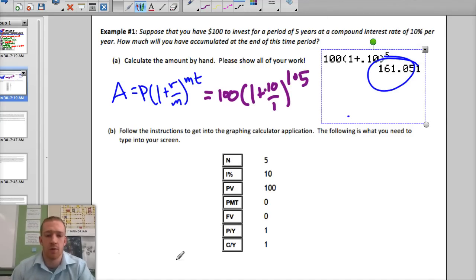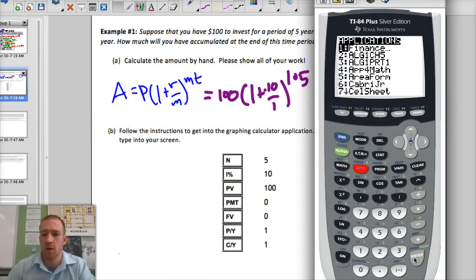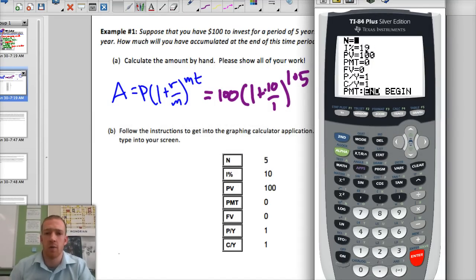So we should get $161.05. So now let's use the TVM solver. What we're going to do is go back to our calculator and try this. So you use the apps, the finance, the TVM solver. And I've already plugged this in. Actually, I tried to. It should be a 10.